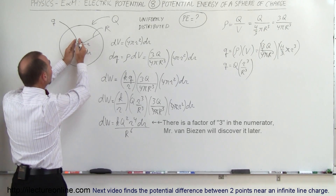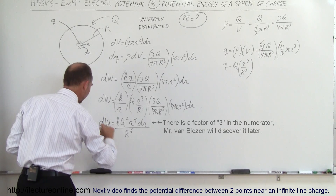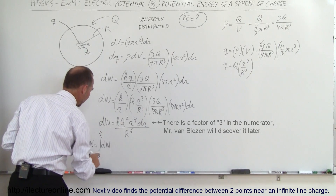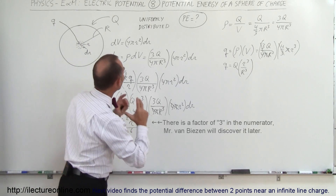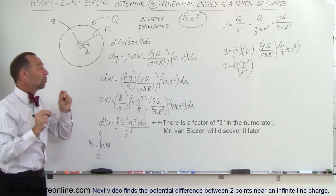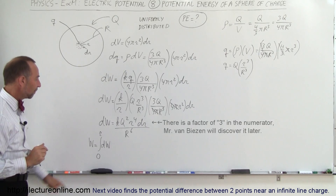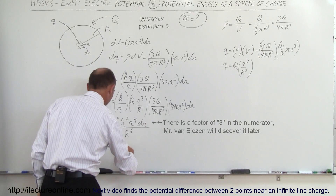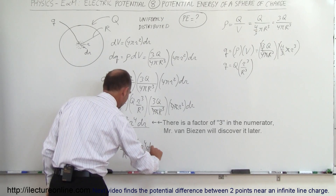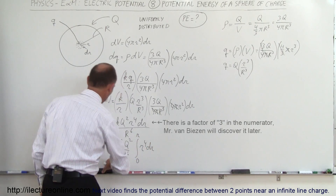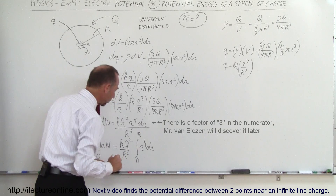To find the total work, we integrate all the little dW's over the entire sphere. We integrate from 0 to R — starting at zero is appropriate since we began with a virtually zero-sized sphere at the center. This gives W = (3kQ² / R⁶) times the integral of r⁴ dr from 0 to R, since we're filling the sphere all the way to its edge.